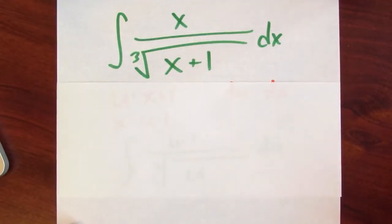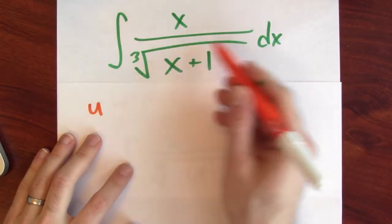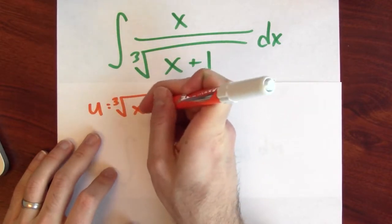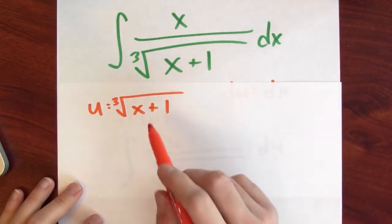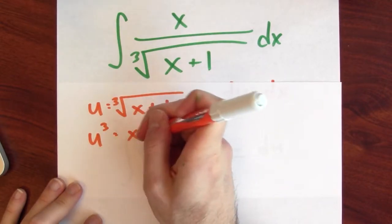So instead, let's set u just to grab the whole denominator. U will be the cube root of x plus 1. And in that case, u cubed is x plus 1.